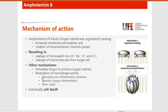Additional mechanisms of amphotericin B include stimulation of pro-inflammatory cytokines, reactive oxygen intermediates, and nitric oxide, leading to modulation of macrophage activity. When all these are synthesized, it results in the activation of macrophages which can engulf the fungal cells and lead to their destruction. Basically, amphotericin B acts on fungal membranes.